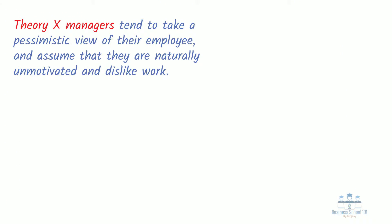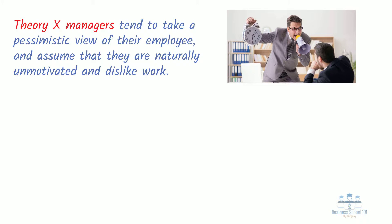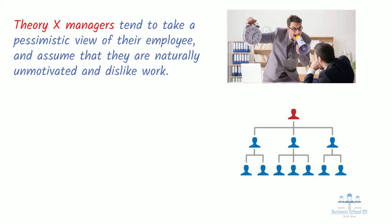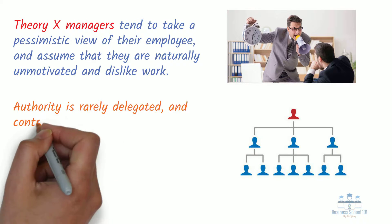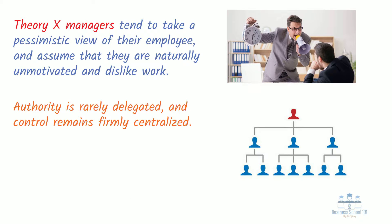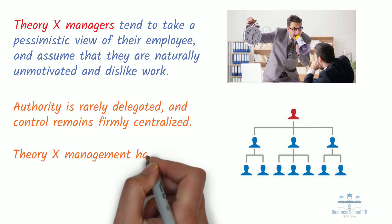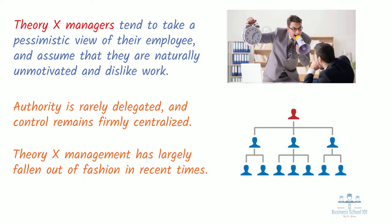So essentially, Theory X managers tend to take a pessimistic view of their employees and assume that they are naturally unmotivated and dislike work. As a result, they think that team members need to be prompted, rewarded, or punished constantly to make sure that they complete their tasks. According to McGregor, organizations with a Theory X approach tend to have several tiers of managers and supervisors to oversee and direct workers. Authority is rarely delegated, and control remains firmly centralized. Managers are more authoritarian and actively intervene to get things done. Although Theory X management has largely fallen out of fashion in recent times, big organizations may find that adopting it is unavoidable due to the sheer number of people that they employ and the tight deadlines that they have to meet.